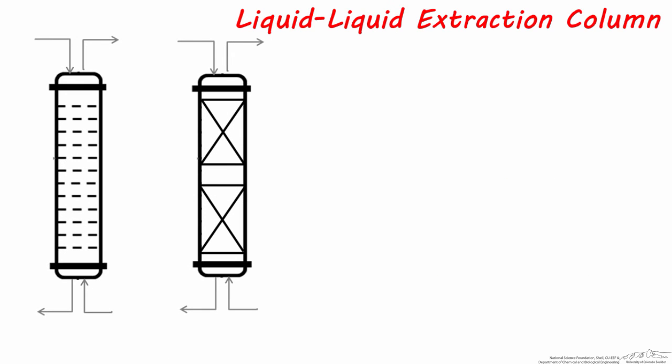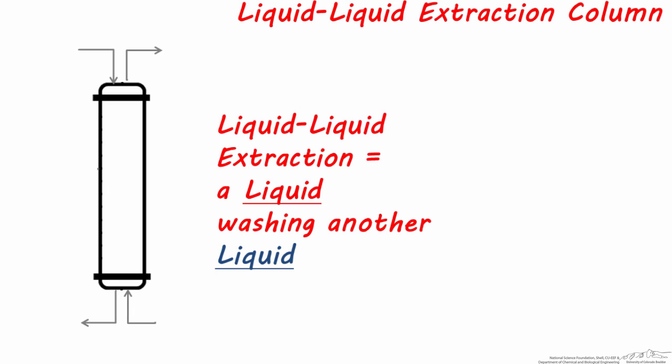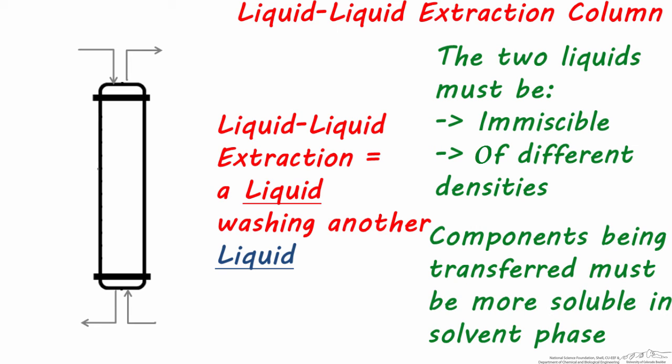This last separation process unit, liquid-liquid extraction, is another method for purifying liquid streams and can use either tray or packed columns. Liquid-liquid extraction is a separation method where one liquid is washing another liquid. In order for one liquid to clean another effectively, the two liquids must be immiscible and of different densities. Also, because this separation technique is based on solubility, components being transferred must be more soluble in the solvent phase, the liquid doing the washing, otherwise the contaminant will not leave one liquid to go to another. If any of these criteria is not met, the separation method will not work.